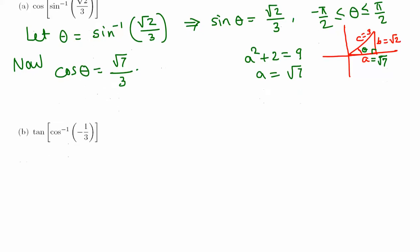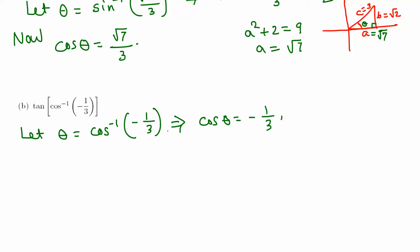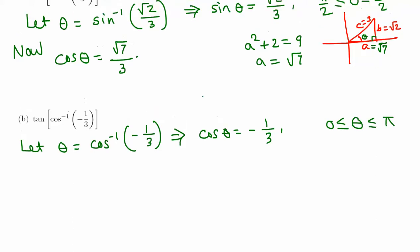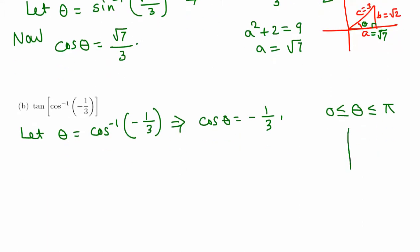For the second question, let theta equal cosine inverse of negative 1 over 3, so cosine theta equals negative 1 third. The range of cosine inverse is 0 to pi, while sine inverse is negative pi over 2 to pi over 2, and tangent inverse is negative pi over 2 to pi over 2 (not inclusive). So theta is between 0 and pi.